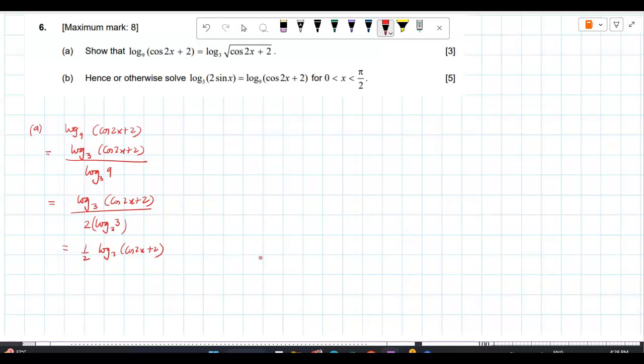Correct? So, you will be left with half. That half goes on top. Cos 2x plus 2 raised to half. Correct? And half means square root.